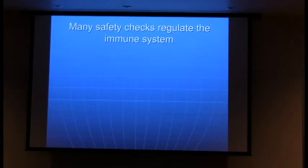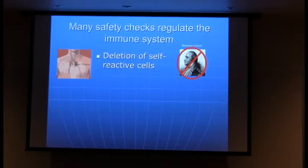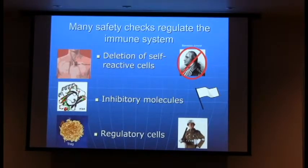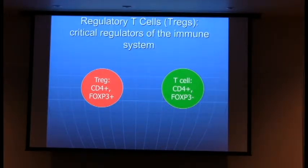There are many safety checks that regulate this balance. For one, you can actually delete self-reactive cells — like Benedict Arnold, you can get rid of parts of the military that are potentially treasonous before they cause trouble. There are also special molecules the immune system makes to inhibit a response. Finally, there are regulatory cells — sort of like the military police — parts of the immune system that regulate other parts to stop it from overreacting. One of the best described is the regulatory T cell.